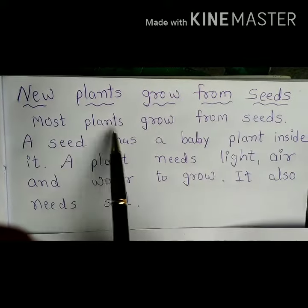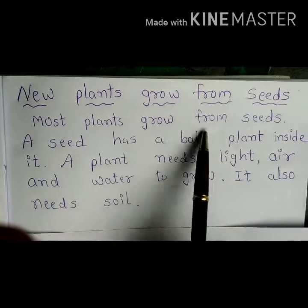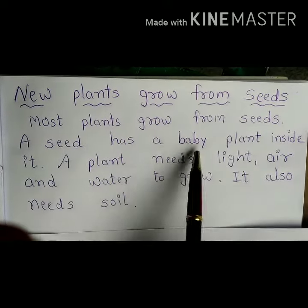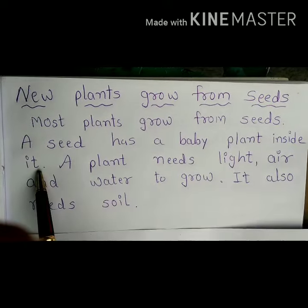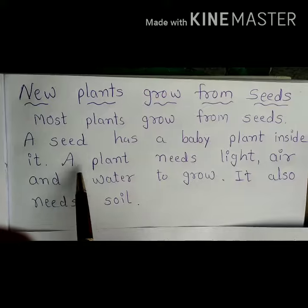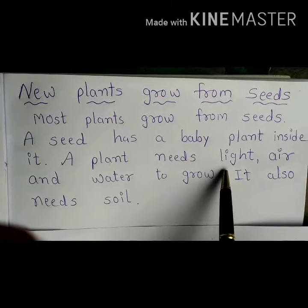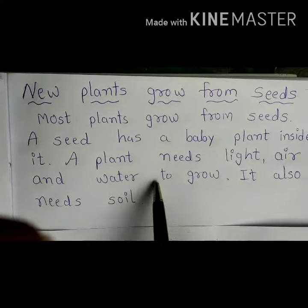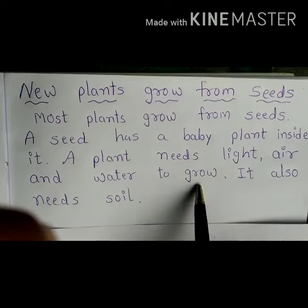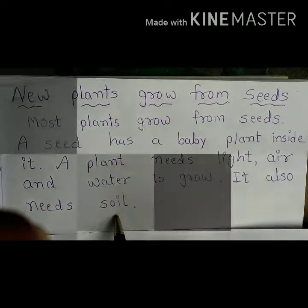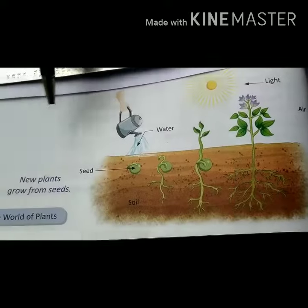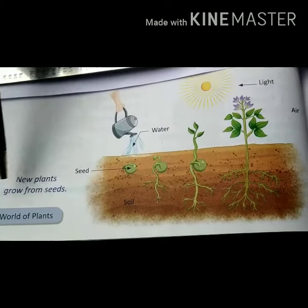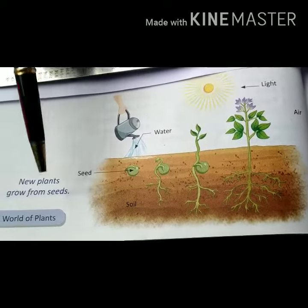Most plants grow from seeds. A seed has a baby plant inside it. A plant needs light, air, water, and soil to grow. You can see here in this picture how new plants grow from seeds.